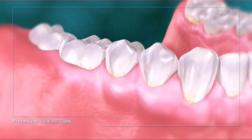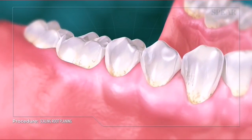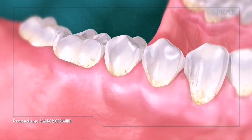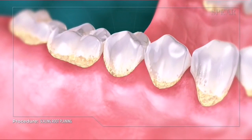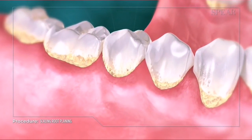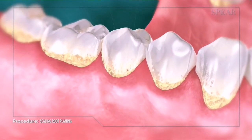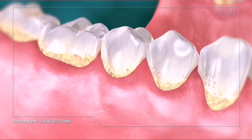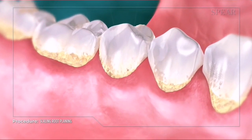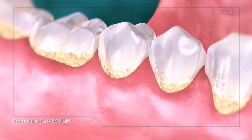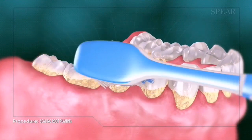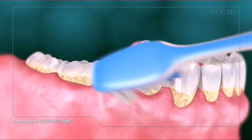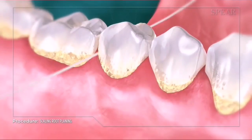Harmful bacteria and hard tartar deposits called calculus build up on your teeth above and below the gum line, releasing toxins that cause gum disease, also known as periodontitis. Unfortunately, this buildup occurs in areas that can't be taken care of by brushing, flossing, or even irregular dental cleaning.